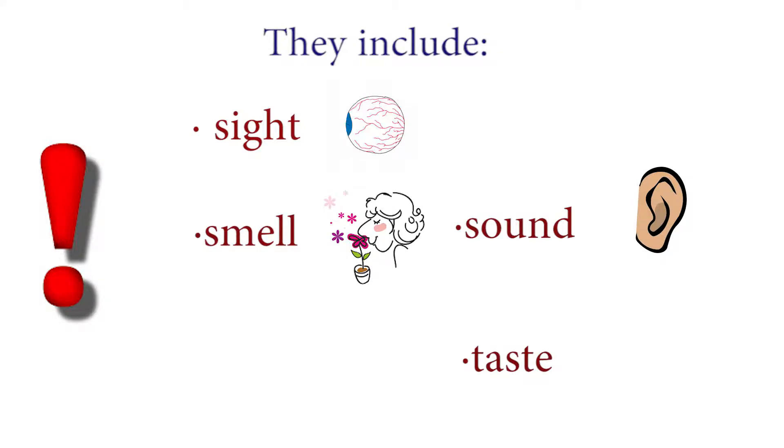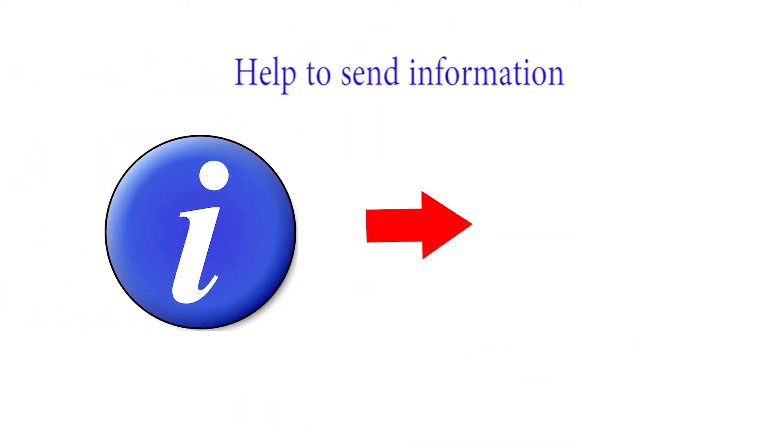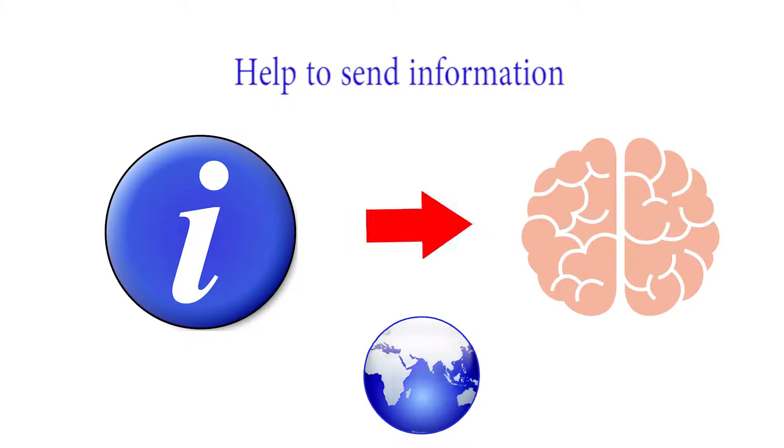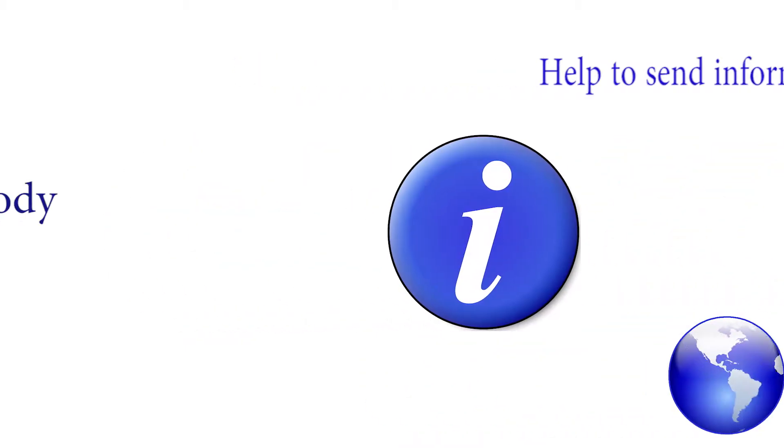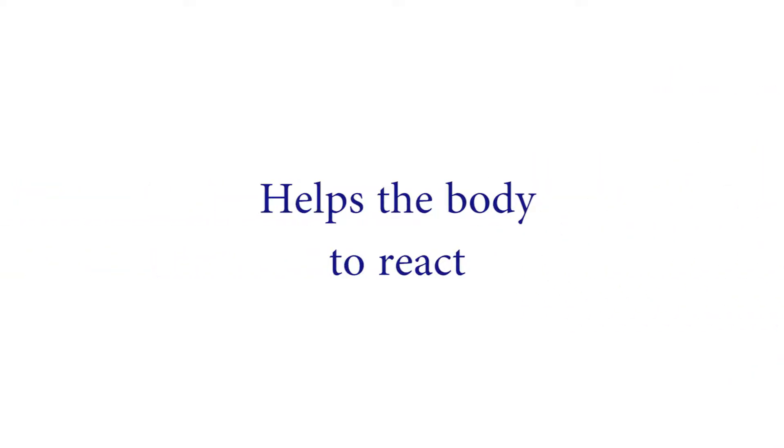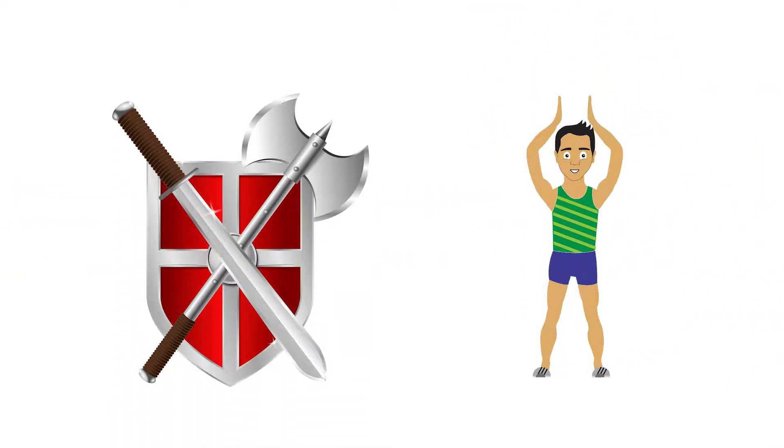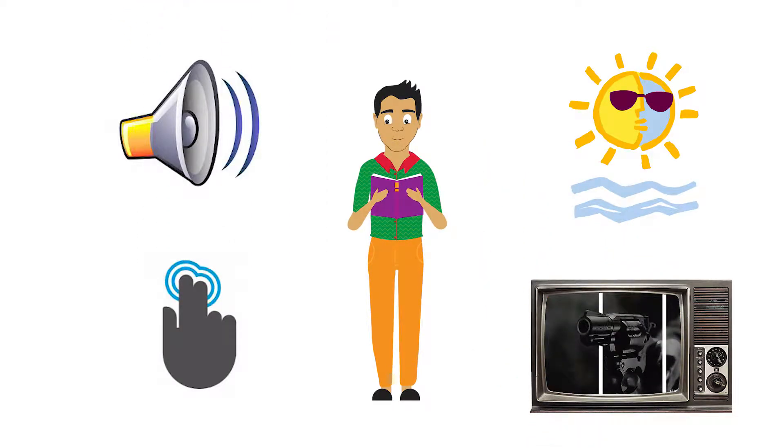The five senses help to send information about our environment to the brain, which in turn helps the body to react in order to keep safe and healthy. We are also able to enjoy the things surrounding us because of the senses.